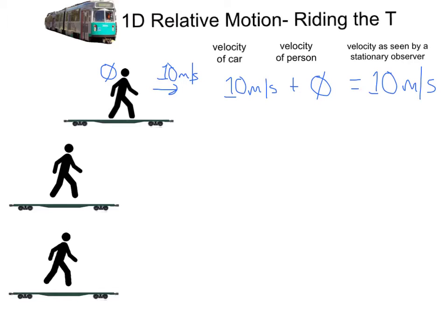We add these motions together like vectors. The velocity of the car as a vector plus the velocity of the person as a vector will equal the relative velocity, or the velocity as seen by a stationary observer.